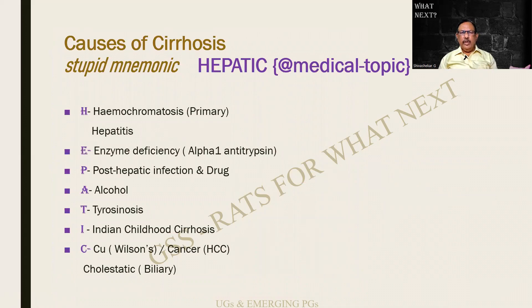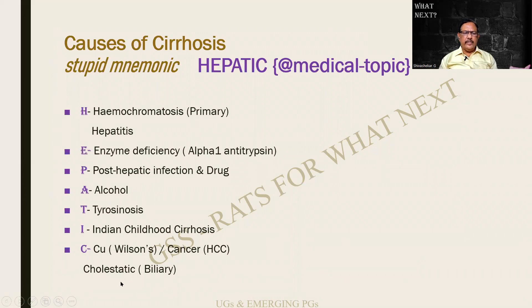There are many causes for cirrhosis. A useful mnemonic is HEPATIC: H for hemochromatosis, E for primary hepatitis and enzyme deficiency (particularly alpha-1-antitrypsin), P for post-hepatic, A for alcohol, T for tyrosinosis, I for Indian childhood cirrhosis, C for copper, cancer or hepatocellular carcinoma, and biliary causes. This is a helpful mnemonic for recapitulation — so if asked what is not a cause of cirrhosis, it should not be difficult.